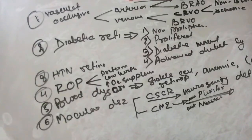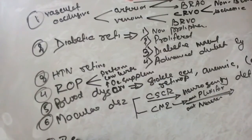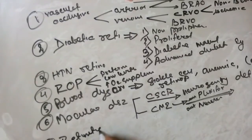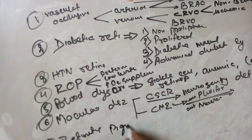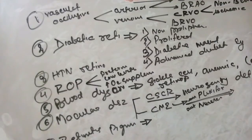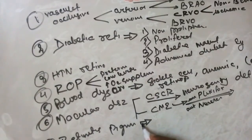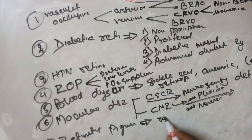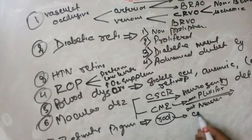Another disease we will study is Retinitis Pigmentosa. This is usually hereditary and genetic. It is a broad topic whose causes are also very broad. Usually it affects the rods at the initial stage, and later it also includes the cones.